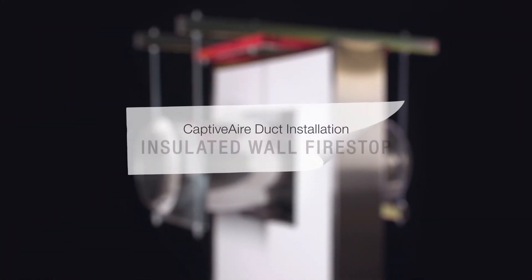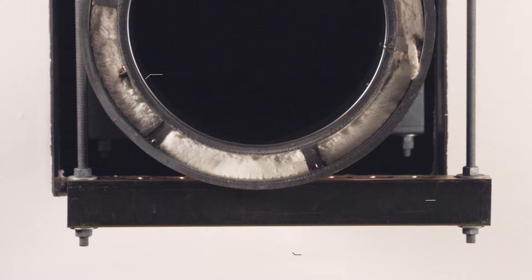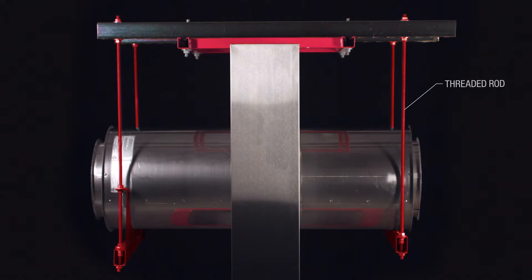When installing a horizontal firestop in a firewall, first make sure duct supports are in place before positioning a section of duct through the wall.